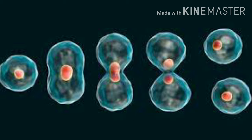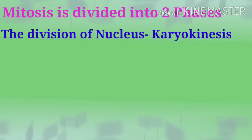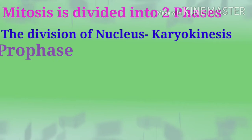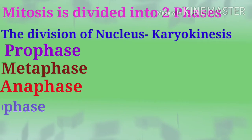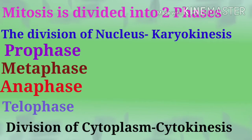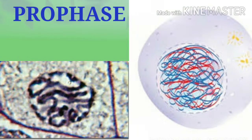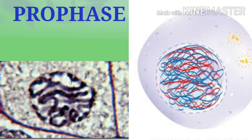Mitosis is divided into two phases. Karyokinesis includes prophase, metaphase, anaphase, and telophase, followed by division of the cytoplasm called cytokinesis. In prophase, chromosomes contract, spiral, and become visible even under a light microscope, and the nuclei become smaller.